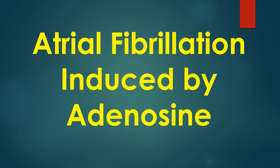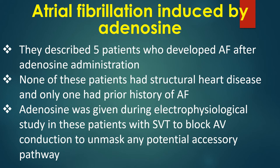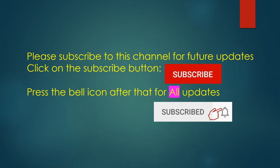Adenosine is widely used in the termination of supraventricular tachycardia. One of the initial reports of atrial fibrillation induced by adenosine was by Silverman and Associates in 1996. They described 5 patients who developed AF after adenosine administration. None of these patients had structural heart disease and only one had prior history of AF. Adenosine was given during electrophysiological study in patients with SVT to block AV conduction and unmask any potential accessory pathway.